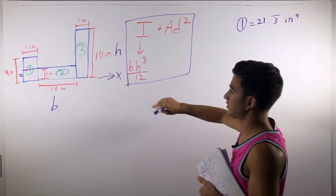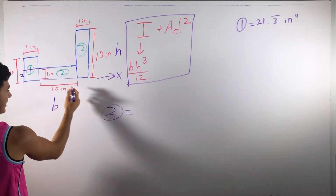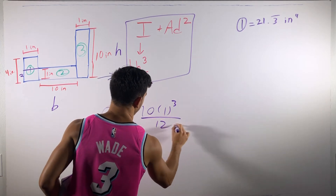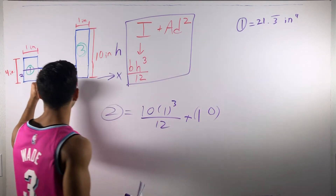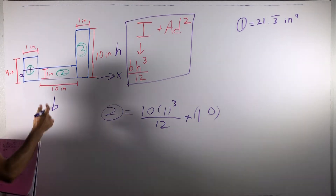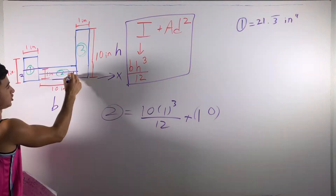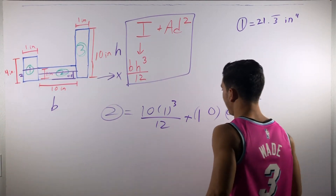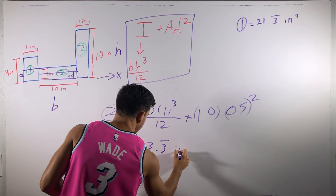Now let's look at section 2. The base is 10, the height is 1 to the third divided by 12, plus the area: 10 times 1 is 10. Our D is the distance between the centroid and whatever we're rotating about. The centroid is half the height and the height is 1, so if it's right here on the x-axis, that's just 0.5. So our D for this case is 0.5 — don't forget to square it. If you compile all this together, that gives you 3.3 repeating inches to the fourth.